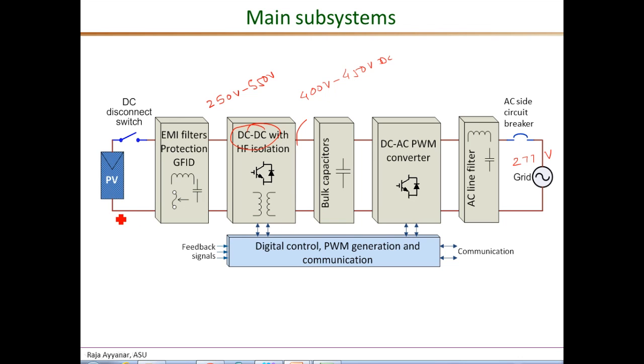If the PV array is grounded—probably it is required by some utilities—then we necessarily need this transformer isolation, and this side is with respect to the ground whereas this is isolated from the input ground. The DC-DC converter connects to the bulk electrolytic capacitors.